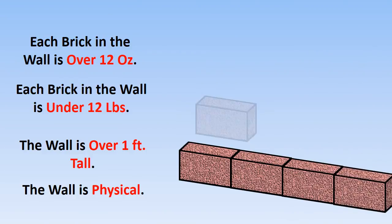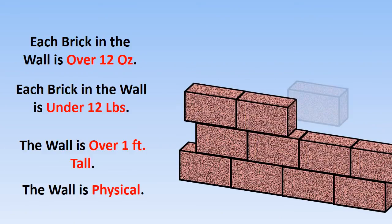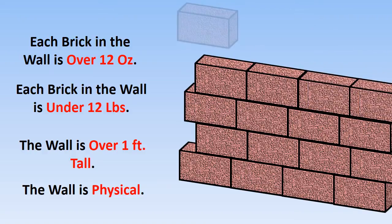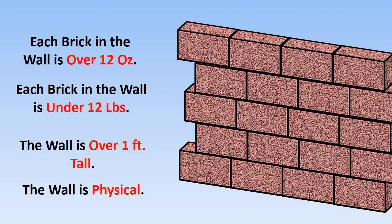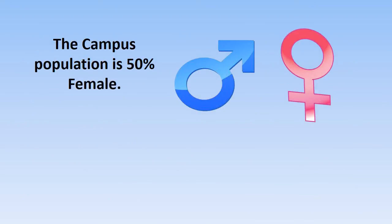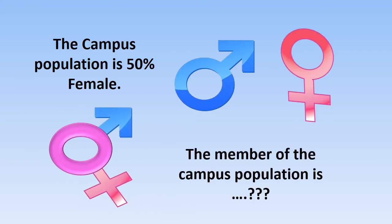For example, if somebody says each brick in the wall is over 12 ounces — you can move to the conclusion that the wall is going to be over 12 ounces, as that property distributes easily. But if each brick is under 12 pounds, that property does not distribute to the wall as a whole. Or if the wall is over 1 foot tall, it doesn't follow that each brick is over 1 foot tall. But if the wall is physical, the property of physicality probably does distribute. And if the campus population is 50% female, that 50% femaleness does not distribute down to each individual member.